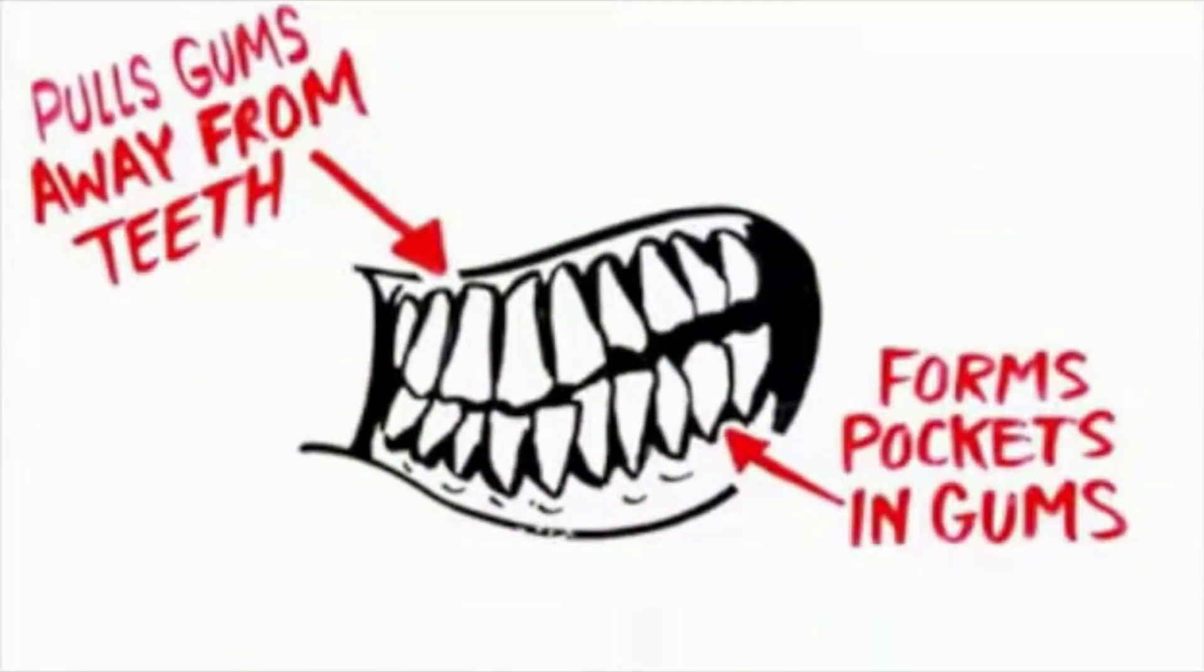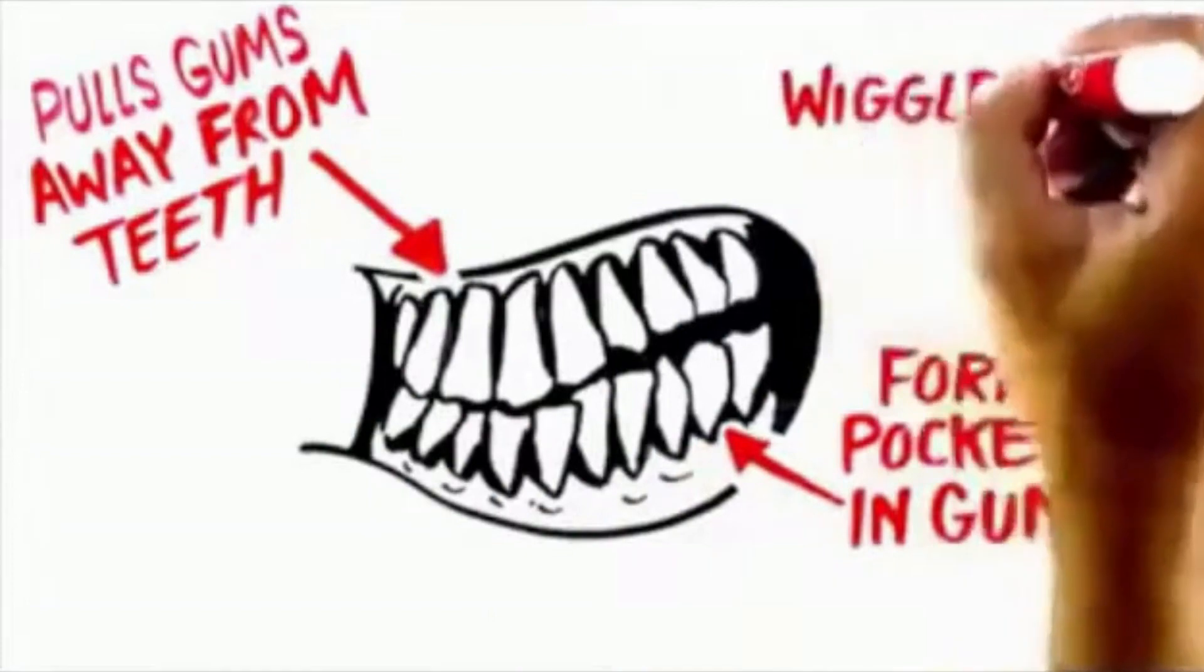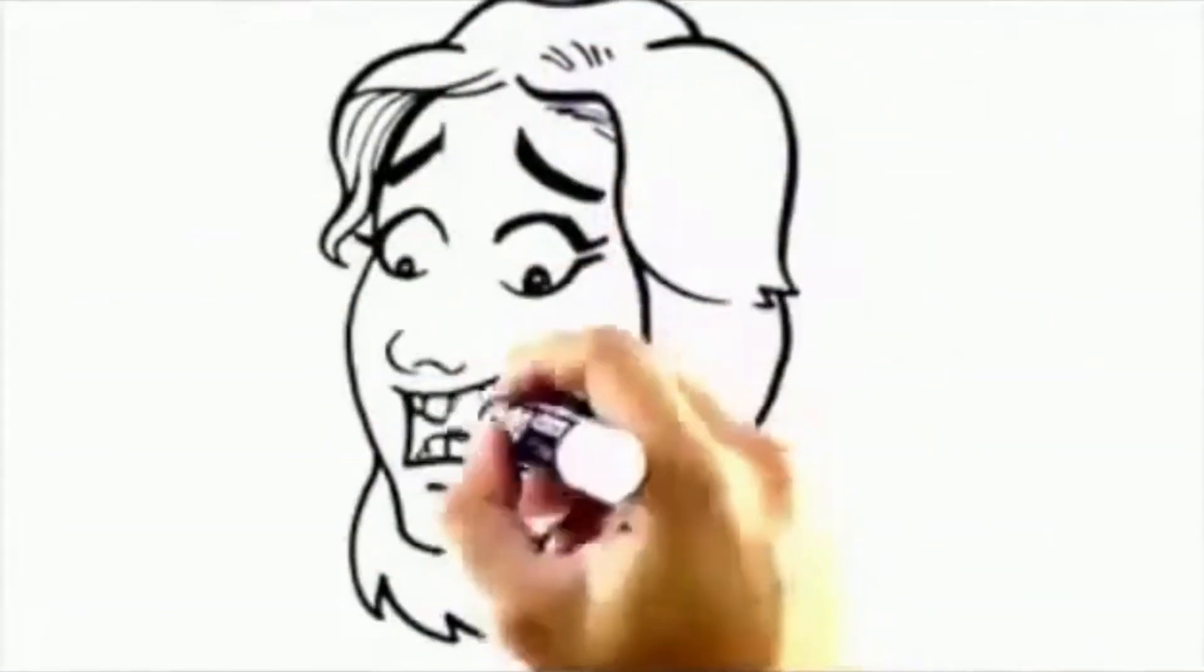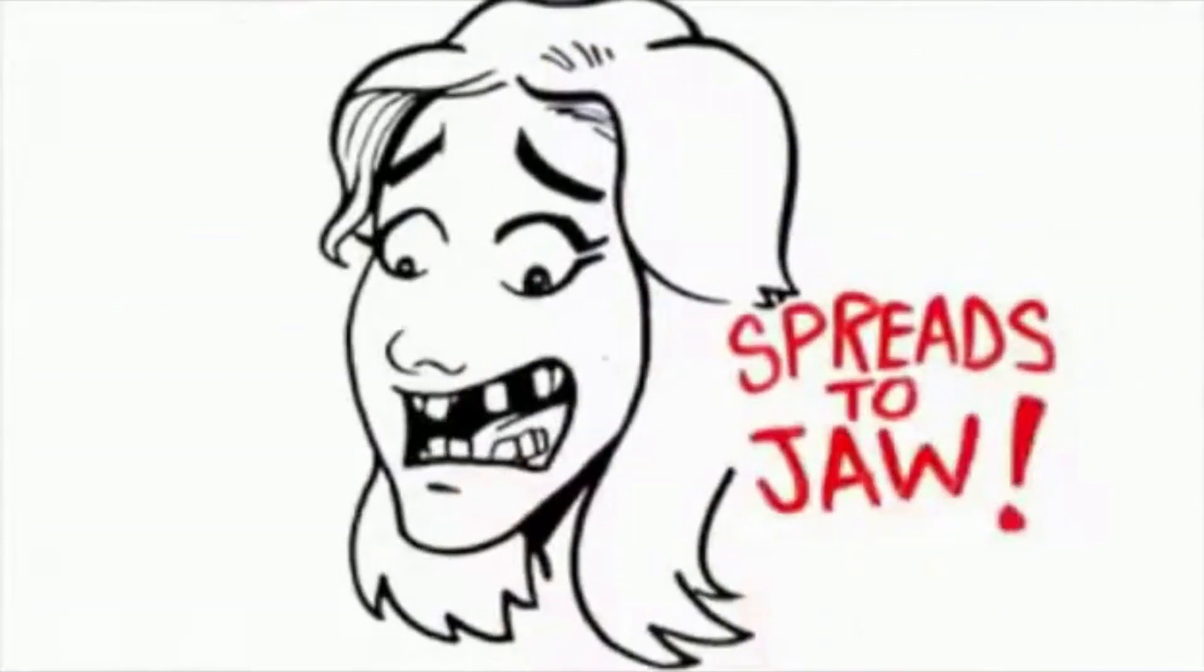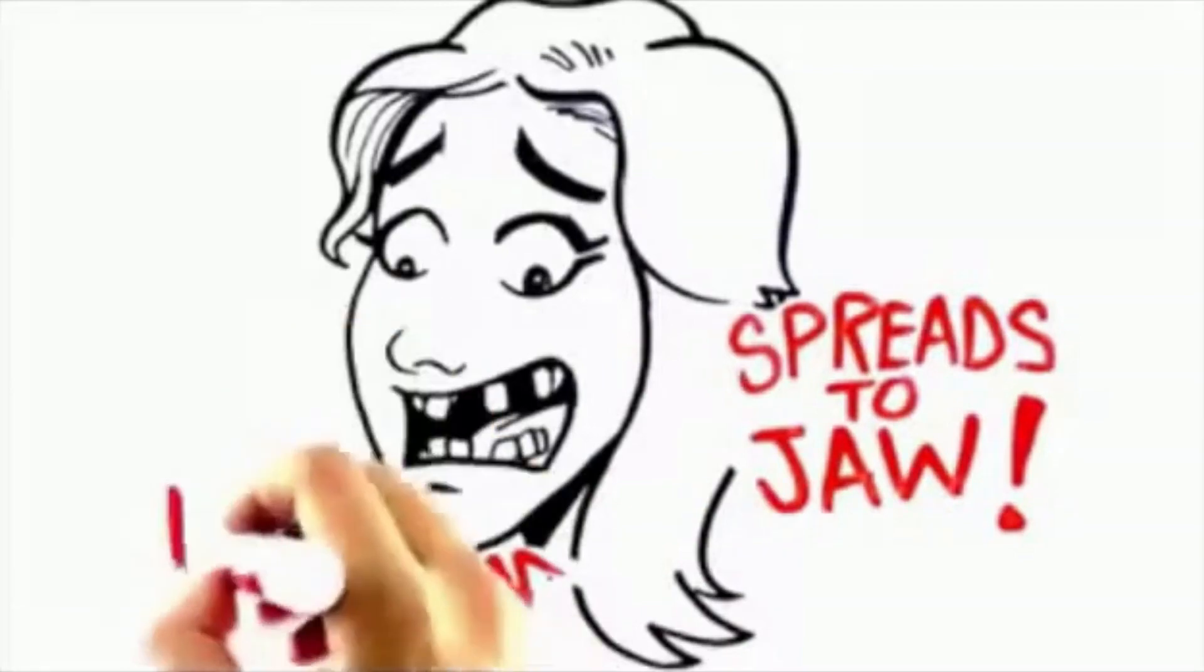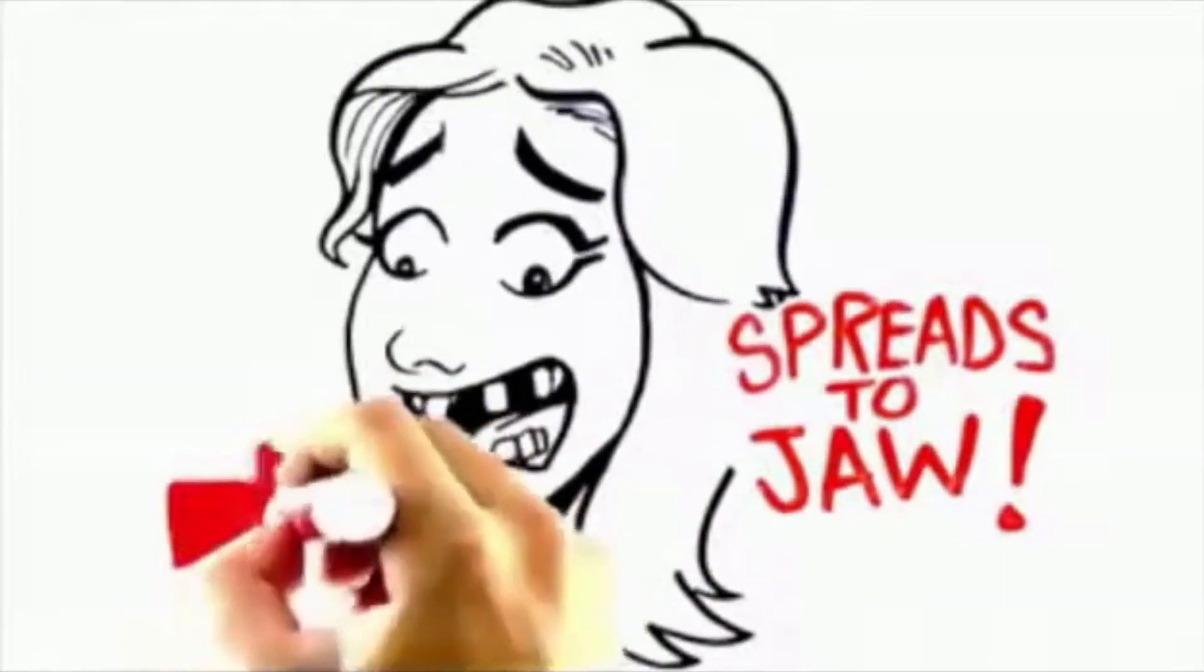Eventually, this leaves your entire tooth exposed, making it wiggle to the touch. Sometimes the infection becomes so severe that it spreads to the jaw, breaking down tissue that holds teeth in place.